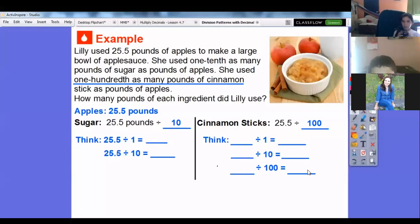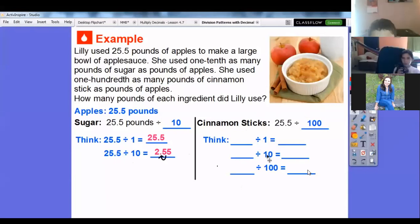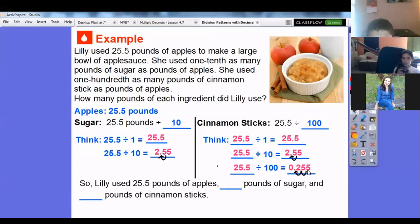Let's go over here and think of the cinnamon sticks. These are all 25.5. We're going to divide by 1, by 10, by 100, because cinnamon sticks are one hundredth. 25.5 divided by 1 is easy, 25.5. 25.5 divided by 10 we did over there, so that's 2.55. 25.5 divided by 100—there's two zeros, so we're going to move this decimal two places, one, two. Don't forget we always start with the zero, so 0.255. That answers the question: Lily used 25.5 pounds of apples, 2.55 pounds of sugar, and 0.25 pounds of cinnamon sticks.